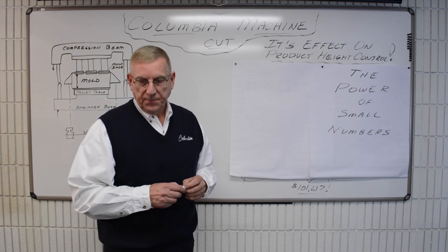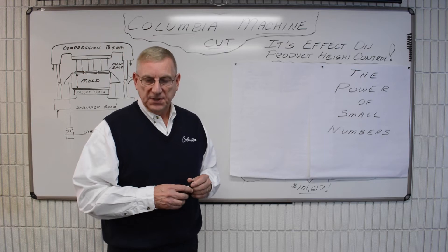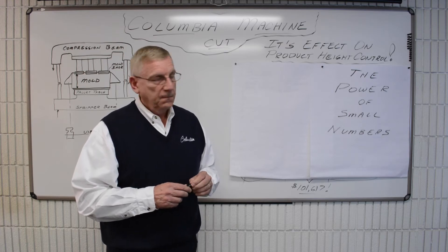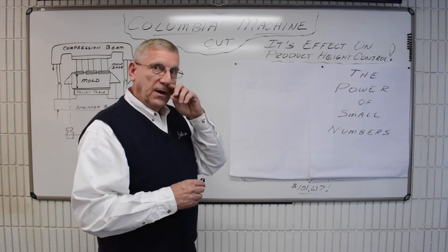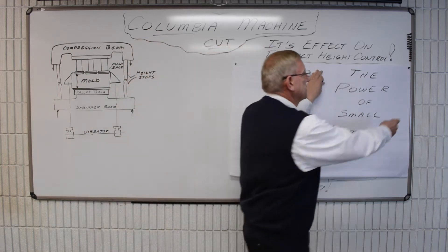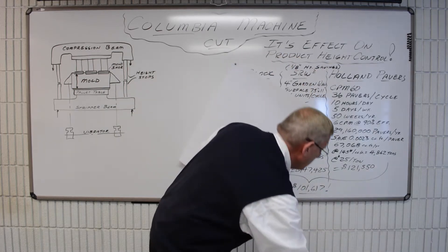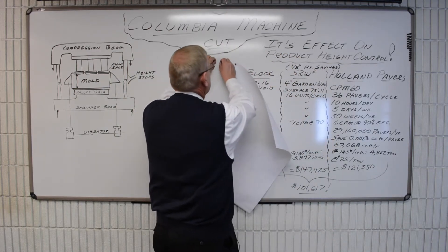There is a cost savings that could be realized by the producer for tighter height tolerances. I like to call this the power of small numbers, and I'd like to go through an exercise example of showing how this might apply to the producer.